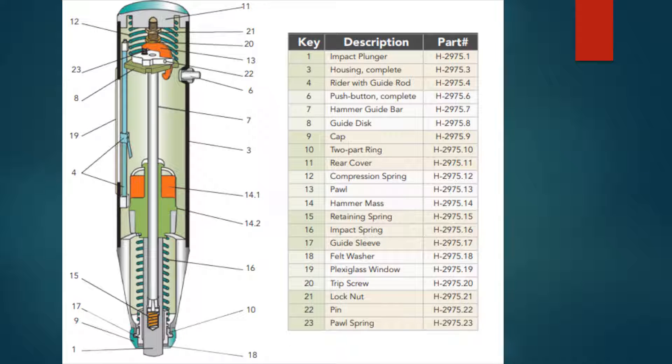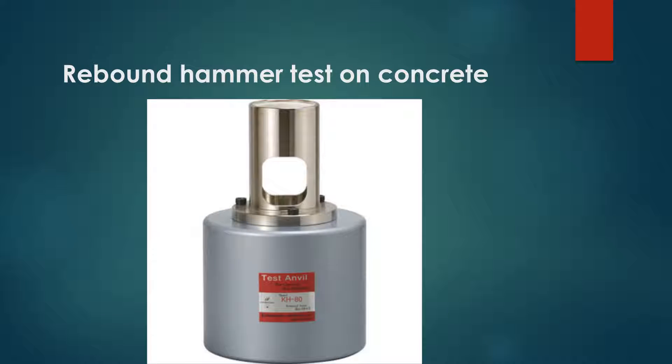The procedure of conducting the rebound test will begin by the calibration of the test instrument. The rebound hammer will be calibrated against a test anvil with known Brinell hardness of 5000 N per millimeter square. After the calibration of the rebound hammer, the test can start.